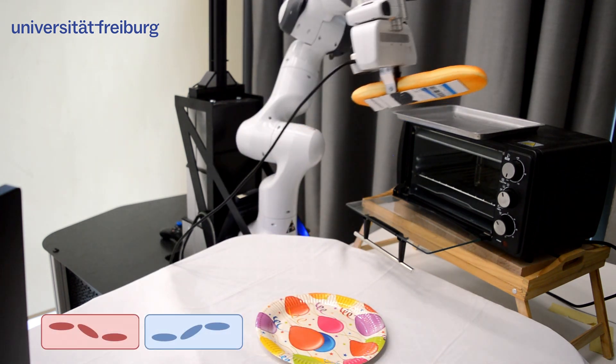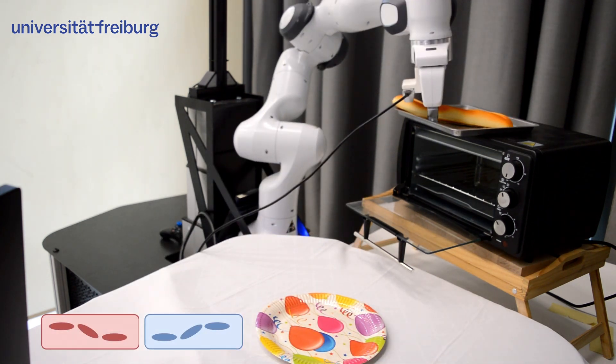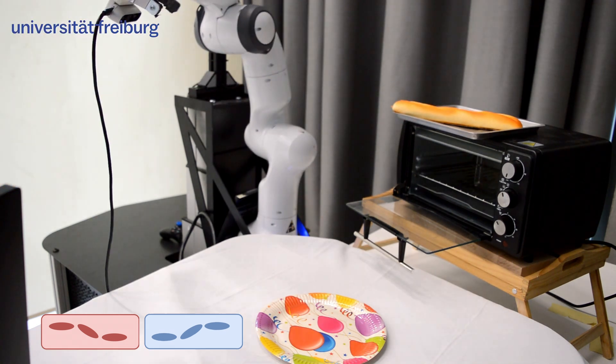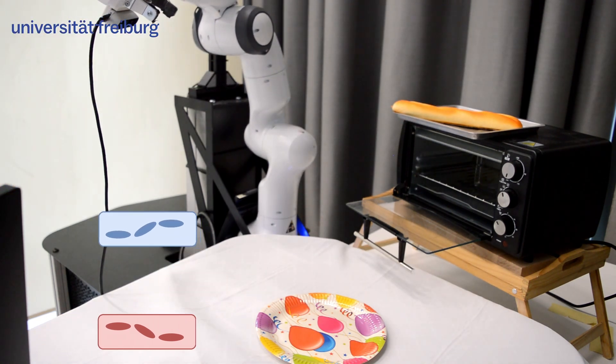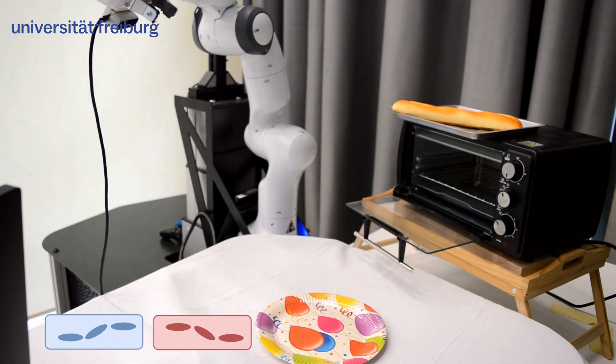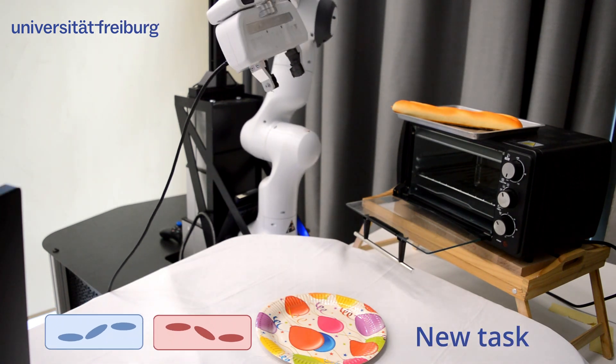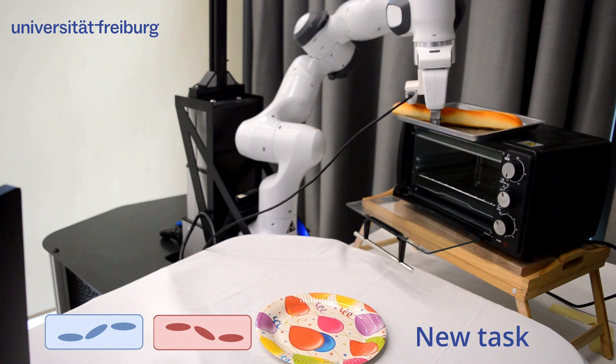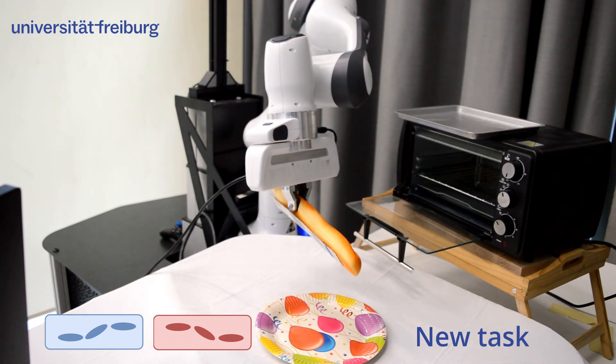Consider the make bread task to consist of taking out the tray and placing the bread. By swapping the order of these skills and inverting their direction, we can for example solve the new task of taking off the bread and placing the tray in the oven without additional training.